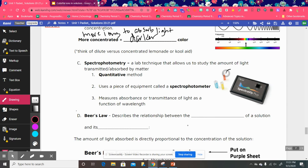This is what our spectrophotometers look like. And then these little vials right here are plastic. They hold about two and a half or three milliliters of liquid. And those are called cuvettes. So it measures absorbance or transmittance of light as a function of wavelength.